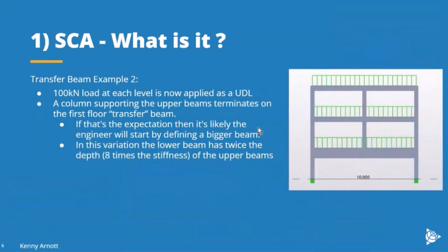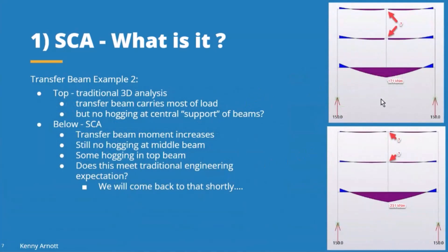Taking the example further: a structure where a column cannot exist at an intermediate level requires a transfer level. There's a large transfer beam and two smaller beams above, with UDLs applied at each level. The span-to-depth ratio is the same at each level, so the bottom transfer beam is twice the size of the upper beams. Running a simple non-staged 3D analysis, you see a large bending moment in the transfer beam, with no immediate way to verify whether it's correct.